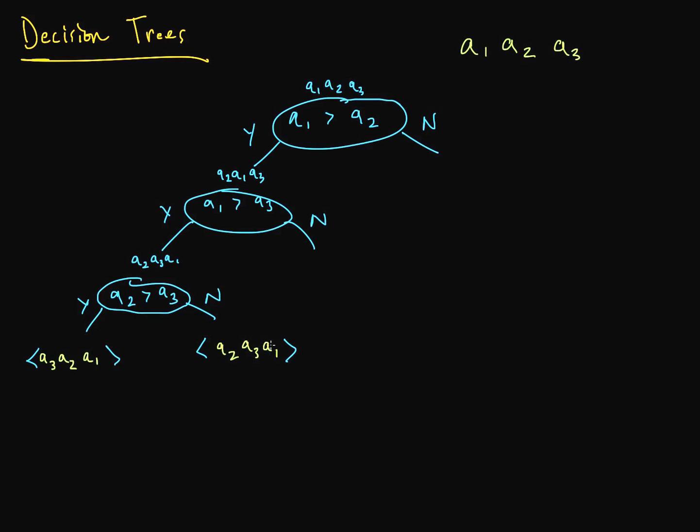So if we go back up again, we're doing this comparison here. We're seeing if a1 is greater than a3. Now, let's say a1 is not greater than a3. And in that case, that means that we have this order: a2, a1, a3.